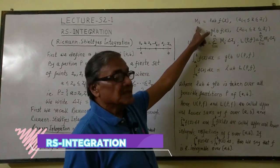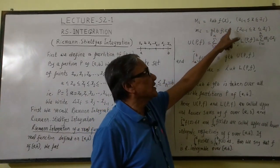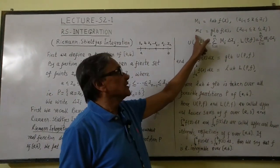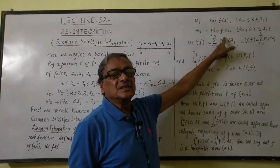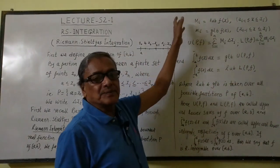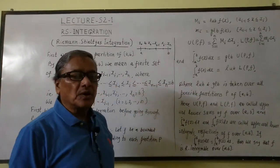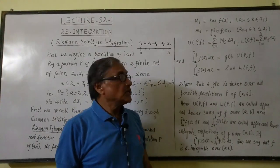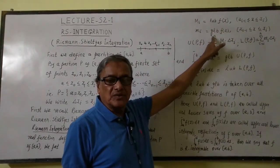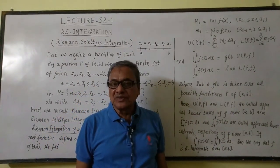We put capital MI equal to least upper bound of f(x) where xi-1 is less than or equal to x is less than or equal to xi. And small mi is equal to greatest lower bound of f(x) where xi-1 is less than or equal to x is less than or equal to xi. Actually these are the two bounds in this subinterval [xi-1, xi] of f(x). We have so many upper bounds and lower bounds, so we have considered the least of the upper bounds and the greatest of the lower bounds.